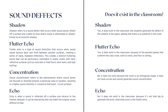Some of the sound effects present in the classroom are shadow, flutter echo, concentration, and echo. The shadow exists because students create a defect where people sitting in front absorb the noise and people at the back won't be able to listen correctly. Flutter echo also exists because the walls, ceiling, and floor are all parallel, so the sound bounces off them. There is no concentration because there are no curves, and echo doesn't exist because the room isn't large enough to generate it.